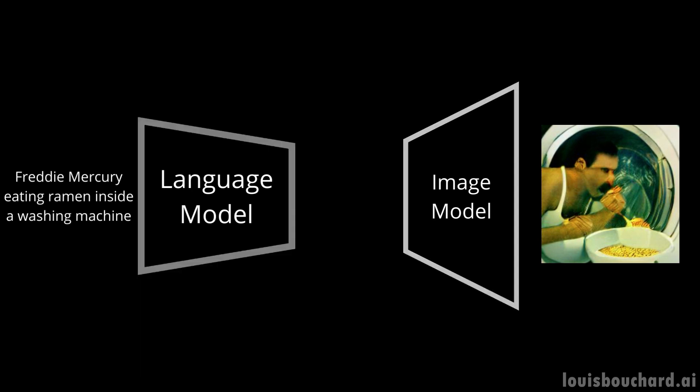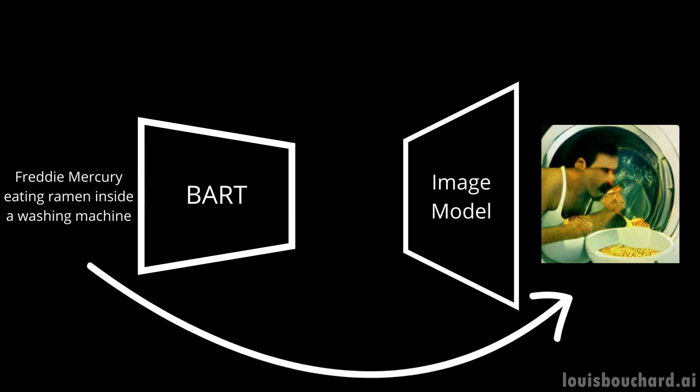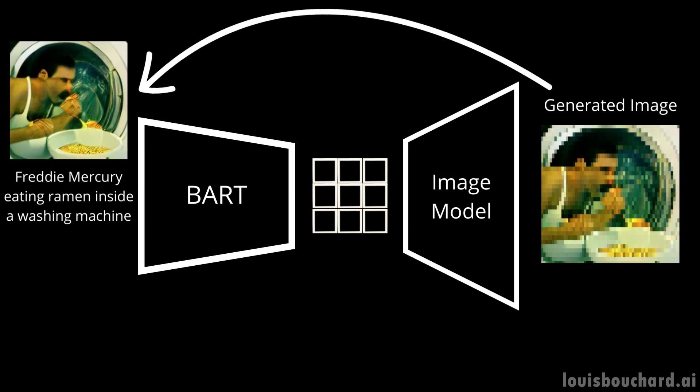The main difference with DALI lies in the model's architecture and training data, but the end-to-end process is pretty much the same. Here we have a language module called BART. BART is a module trained to transform text input into a language understandable for the next module. During training, we feed pairs of images with captions to DALI Mini. BART takes the text caption and transforms it into discrete tokens, which will be readable by the next module, and we adjust it based on the difference between the generated image and the image sent as input.